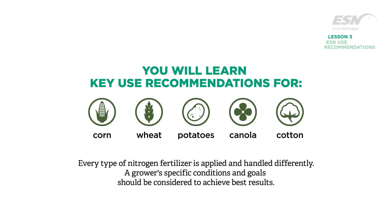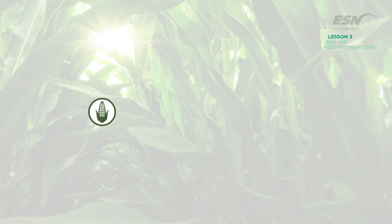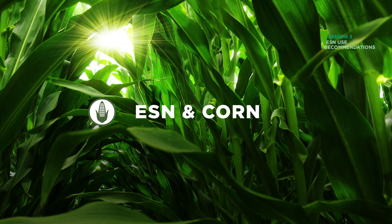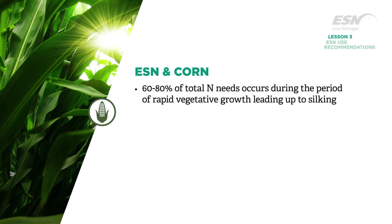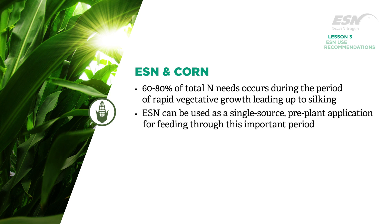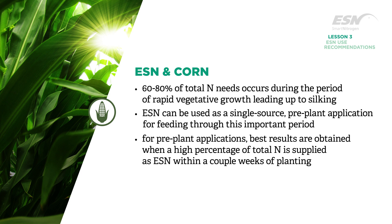The most rapid uptake of nitrogen in corn — 60 to 80 percent of total nitrogen needs — occurs during the period of rapid vegetative growth leading up to silking. ESN can be used as a single source pre-plant application for feeding through this important period. For pre-plant applications, best results are obtained when a high percentage of the total nitrogen is supplied as ESN.